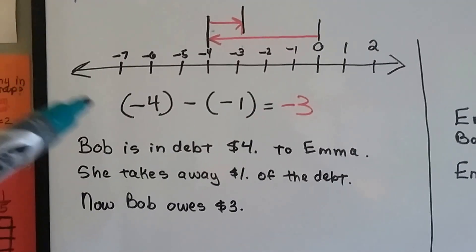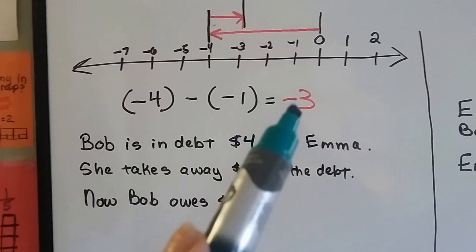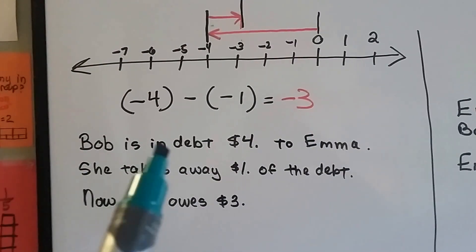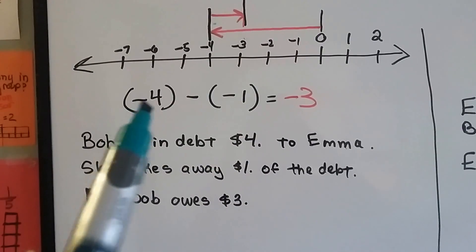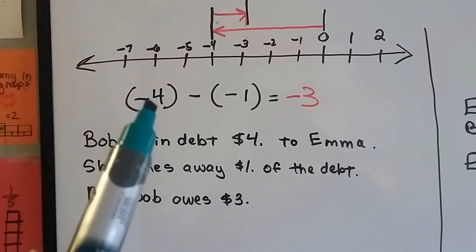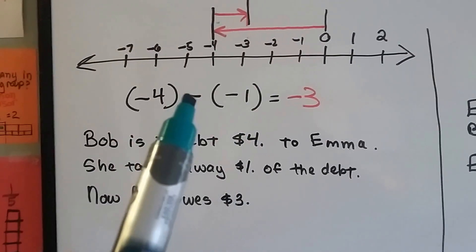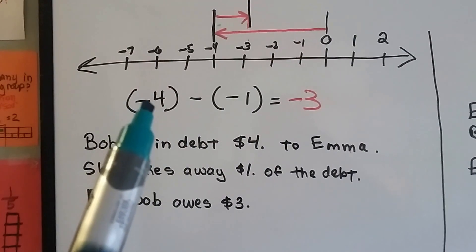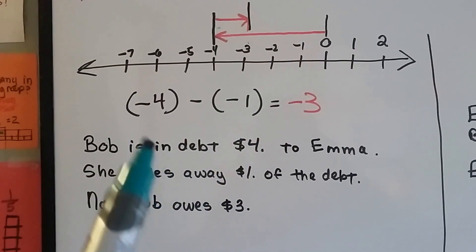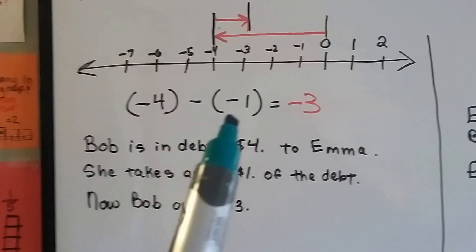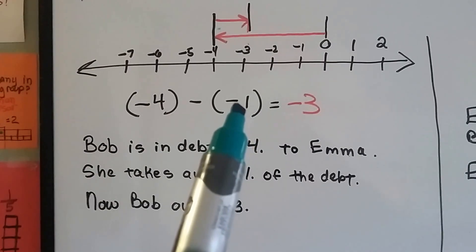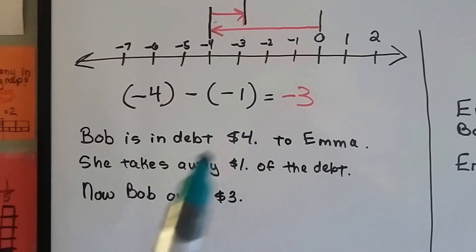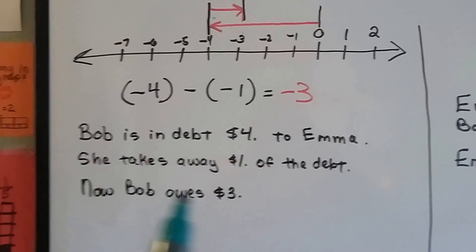Here was our problem. We had negative 4 minus negative 1 and it came out as negative 3. This is how. Bob is in debt $4 to Emma. This negative 4 means he owes $4 to Emma. But Emma is going to take away a dollar of that debt. When we see the negative, I want you to think of owing money. Emma is taking away a dollar of the debt. There's a $4 debt and Emma takes away a dollar of that debt.